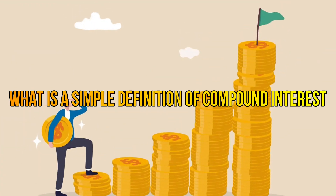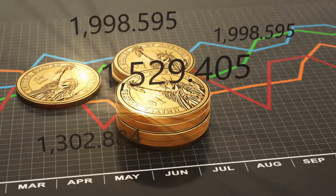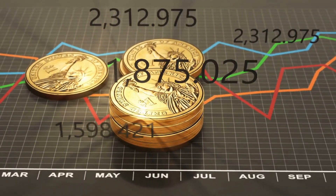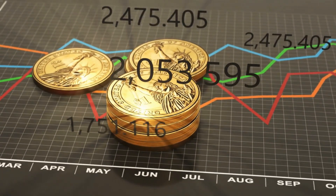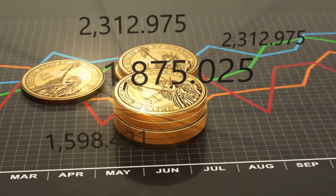What is a simple definition of compound interest? Compound interest simply means you're earning interest on both your original saved money and any interest you earn on that original amount. Although the term includes the word interest, the concept applies beyond interest-bearing bank accounts and loans, including investments such as mutual funds.